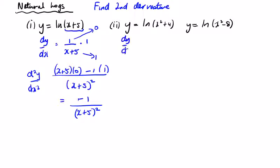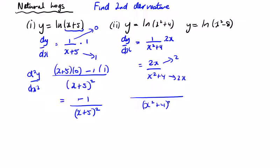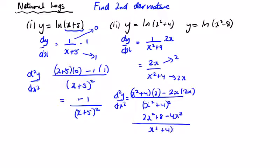This one: dy dx is going to be 1 over x squared plus 4 times 2x, so that's equal to 2x over x squared plus 4. Again the quotient rule: the top goes to 2, the bottom goes to 2x. On the bottom we have the bottom to be squared, and on the top we have the bottom by the top differentiated minus the top by the bottom differentiated. d squared y dx squared: we're going to have 2x squared plus 8 minus 4x squared over x squared plus 4 to be squared. So the second derivative becomes minus 2x squared plus 8 over x squared plus 4 to be squared.